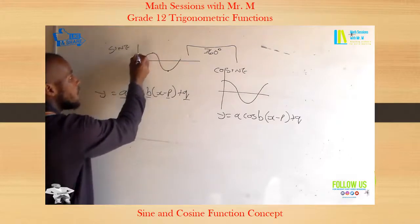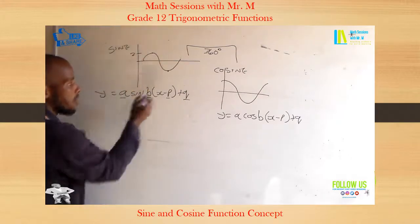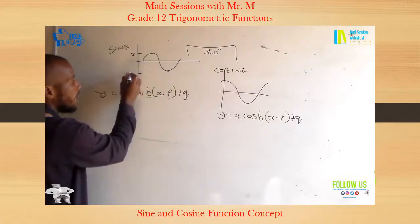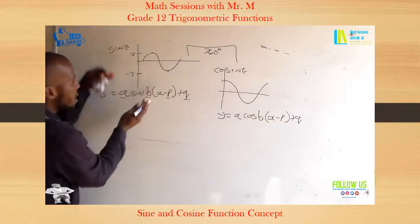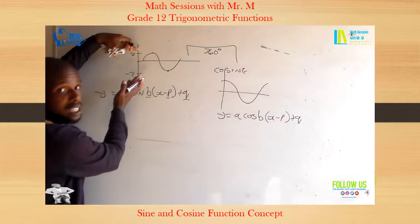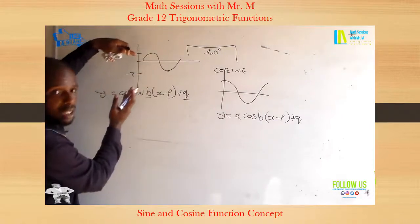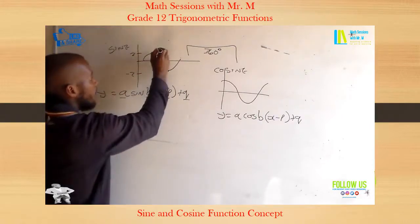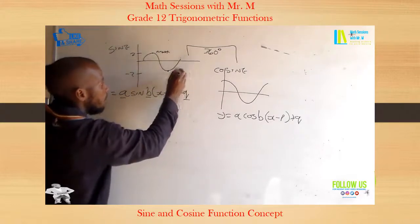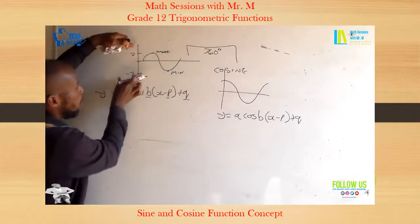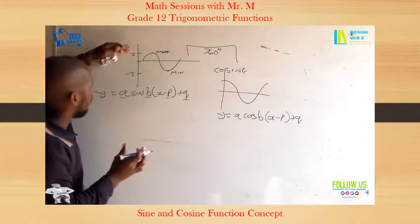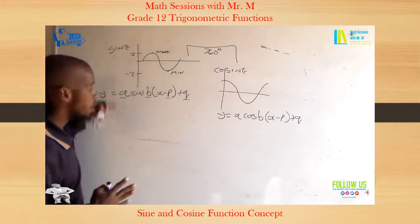So if this point is on positive 2 on the y-axis and this point is on negative 2 on the y-axis, basically the amplitude is half the distance between the maximum and the minimum. So half the distance between 2 and 2 is 2, because when you add them you are going to get 4. So it's 2.